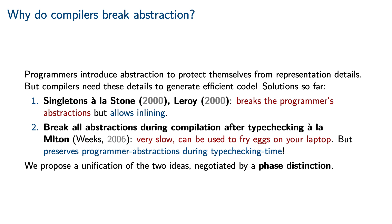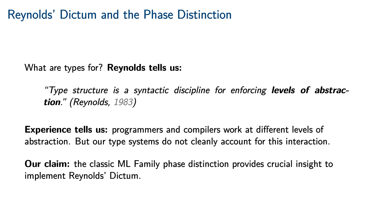We propose a unification of these two ideas that puts the decisions, as far as trade-offs are concerned, into the hands of the programmer, negotiated by a phase distinction. Types do a lot of things, but it is worthwhile to pay attention to what Reynolds said types are for: type structure is a syntactic discipline for enforcing levels of abstraction. Our experience tells us that programmers and compilers are working at very different levels of abstraction — the programmer is introducing abstractions to protect themselves, but the compiler is eliminating these abstractions in order to generate efficient code. Unfortunately, our type systems do not cleanly account for this interaction. We claim that the classic ML family phase distinction provides crucial insight to actually implement Reynolds' dictum in a programming language.